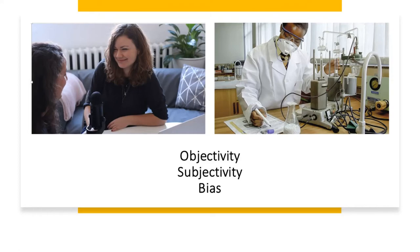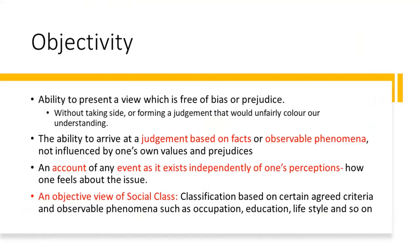Objectivity, subjectivity and bias are key concepts in Sociology. We will look at these three concepts and also try to show how they are linked with the major theoretical approaches, mostly positivist and anti-positivist, that is the interpretivist approaches. Objectivity refers to the ability of the researcher or sociologist to present a view which is free of bias or prejudice — that is, without taking sides or forming a judgement that would unfairly colour our understanding — and the further ability to arrive at a judgement based on facts.